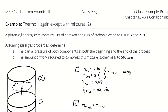Part A is asking us to determine the partial pressure of both components at the beginning and at the end. I'm defining the beginning of the process as state 1 and the end of the process as state 2, so I want to determine 4 partial pressures: the partial pressure of the nitrogen at state 1 and 2, and the partial pressure of the carbon dioxide at state 1 and 2.